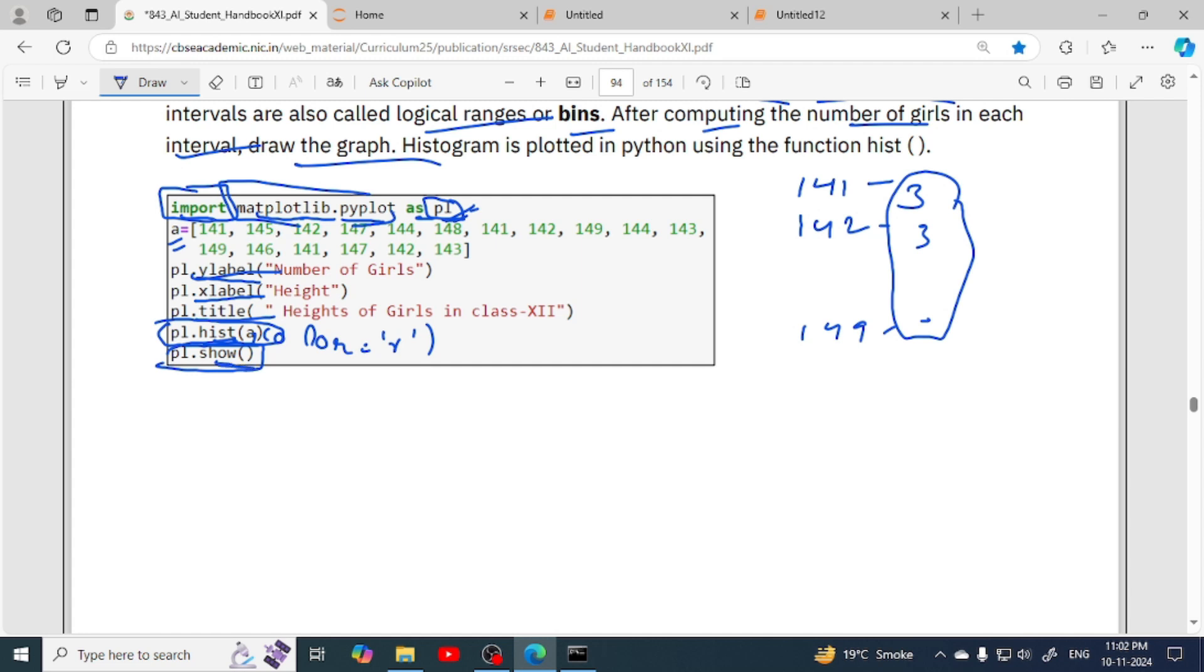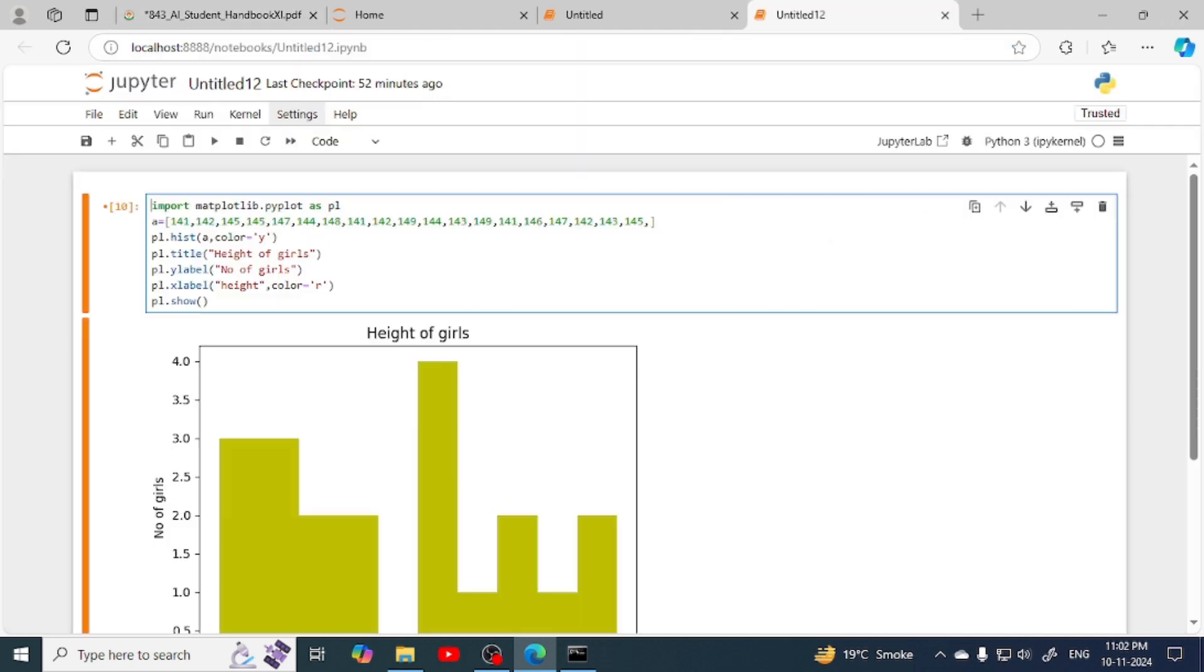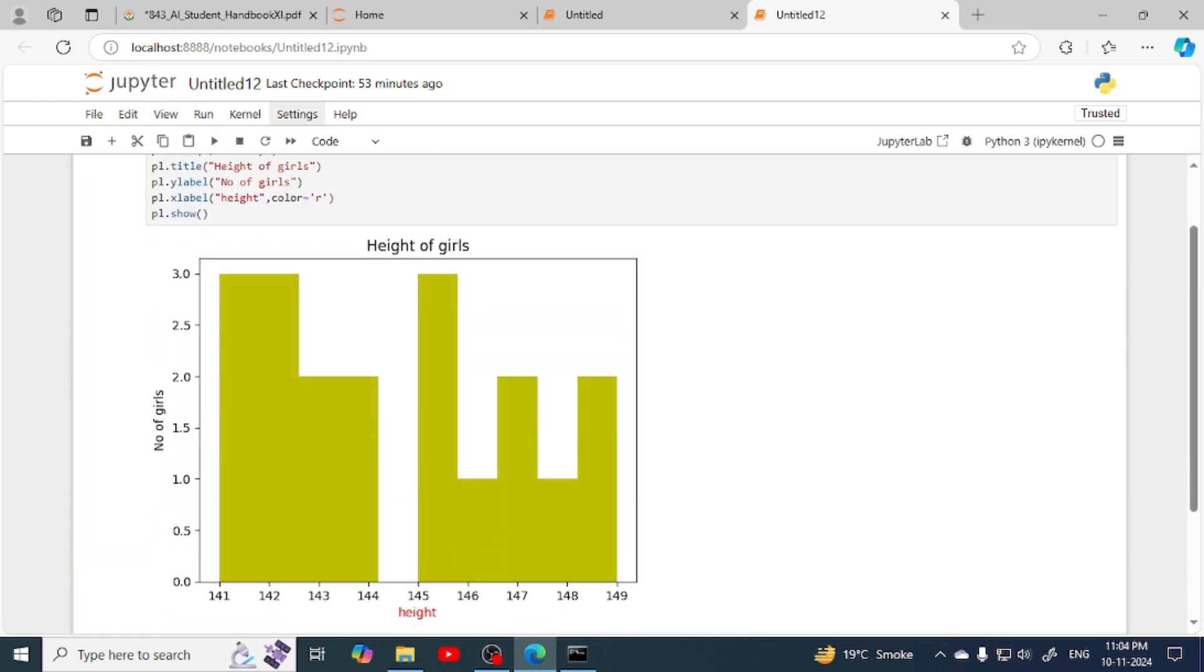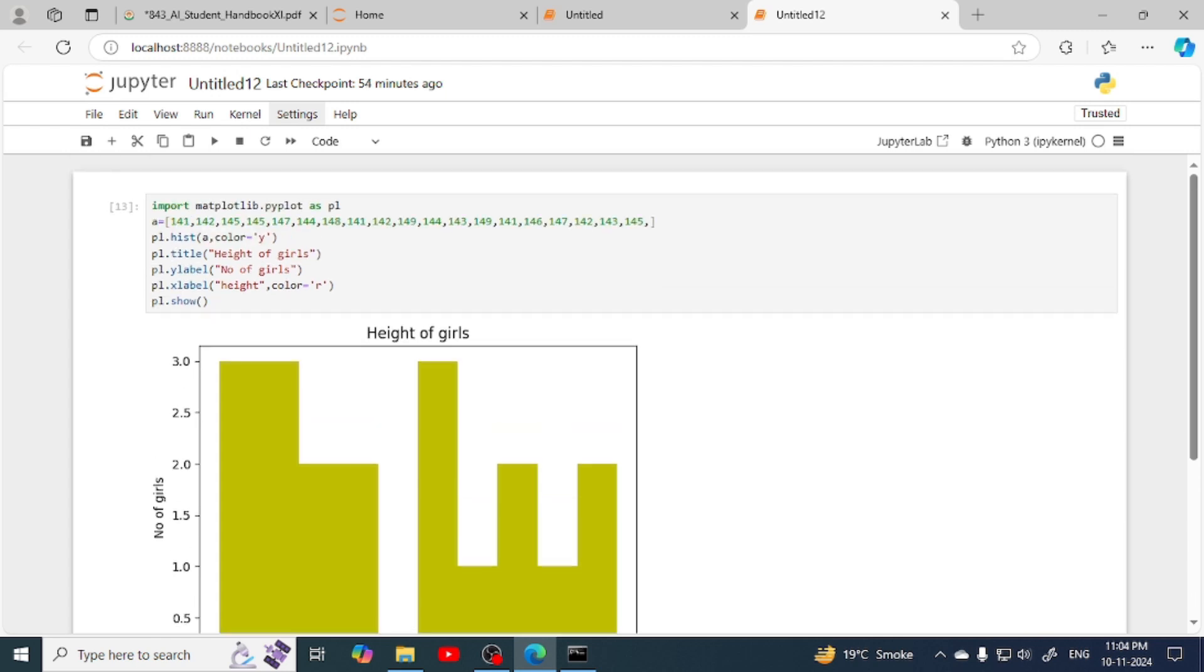Now let's write this program in Jupyter notebook. I have written this program - you can see import matplotlib.pyplot as pl, and this is the data, then hist function with the data passed, color equals to y, then title, x label, y label, and pl.show. You can see the output here. This time it is very difficult to differentiate which value has which bar.